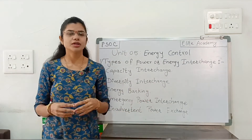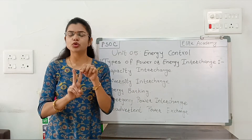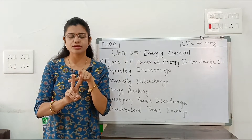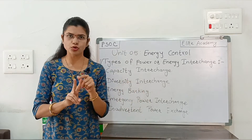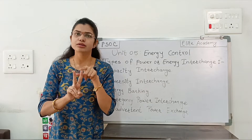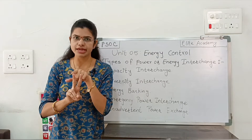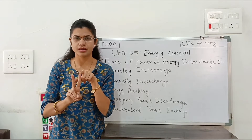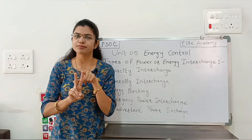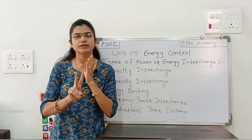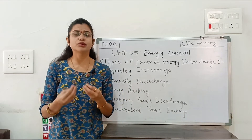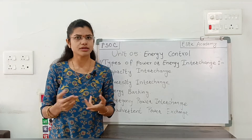The second type is diversity interchange. This is the interchange between plants in different time zones where two plants have different peak load time periods. Suppose one plant's peak load time period is one hour before the second plant's. The first plant will buy some energy from the second plant during its peak load time period. This interchange can also be possible during different seasons.